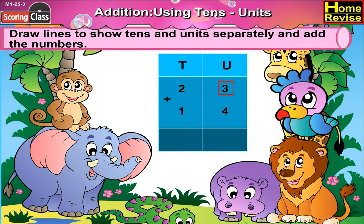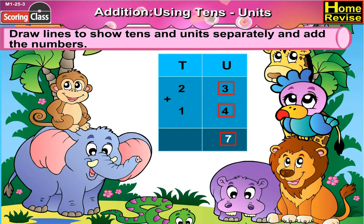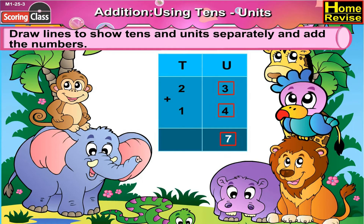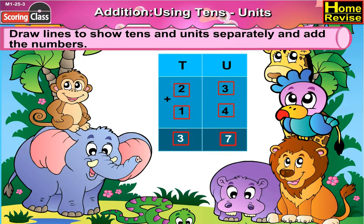3 plus 4 is 7 and 2 plus 1 is 3. So 23 plus 14 is 37.